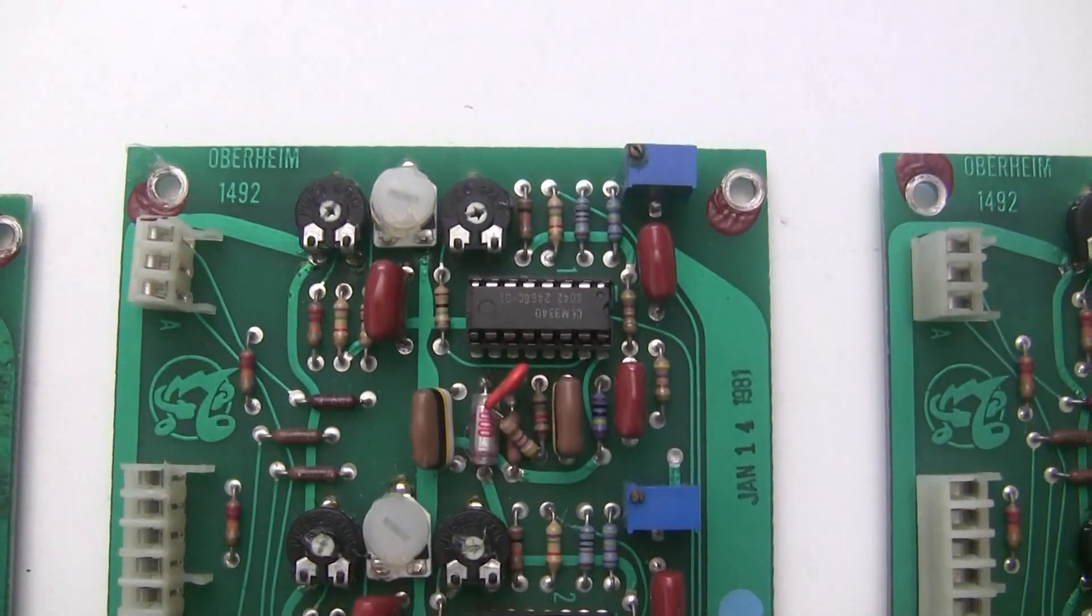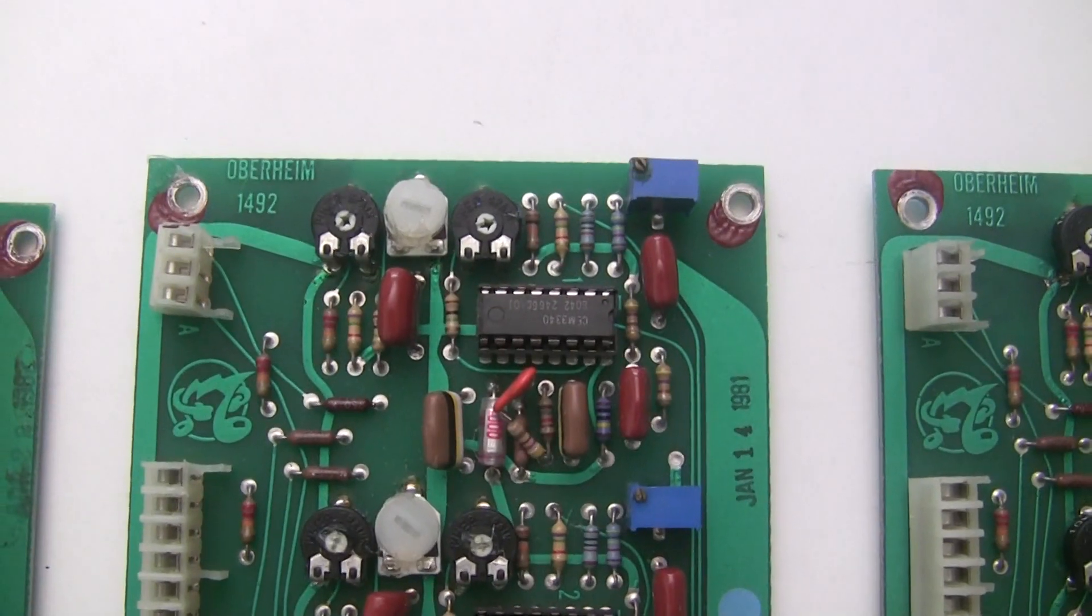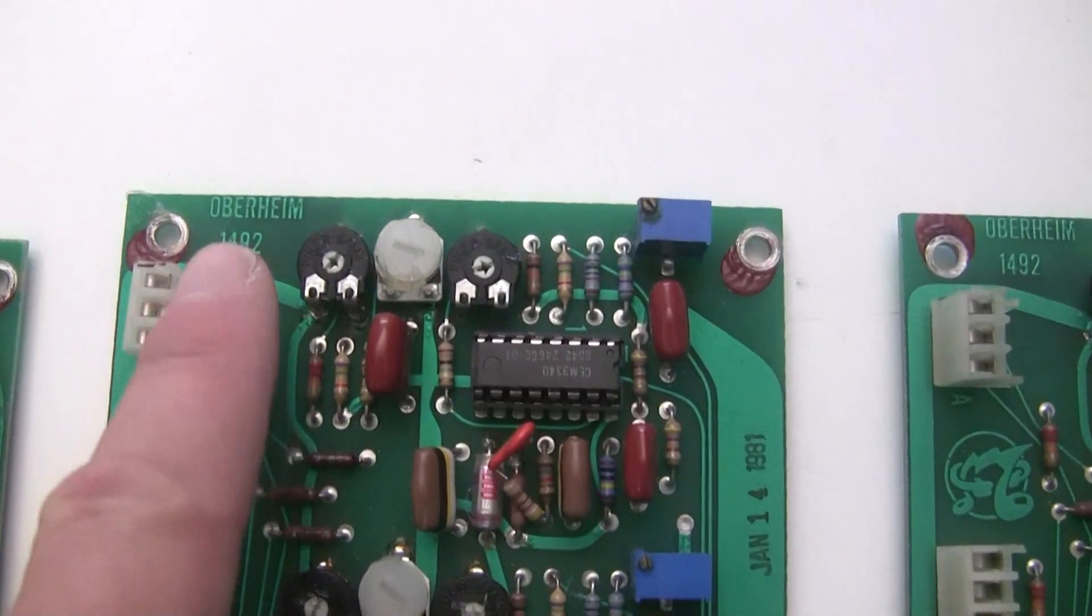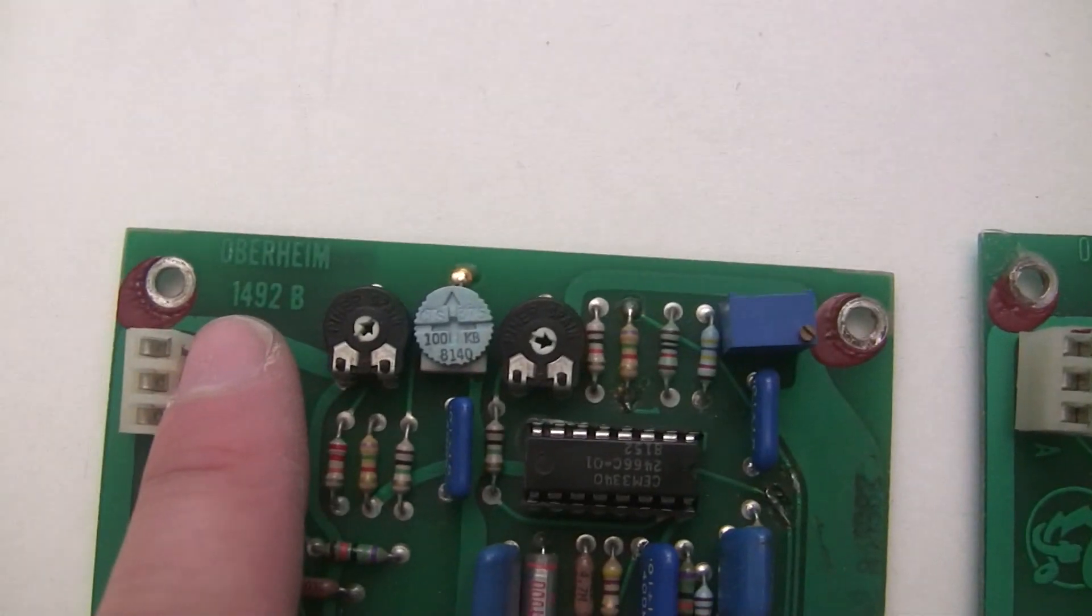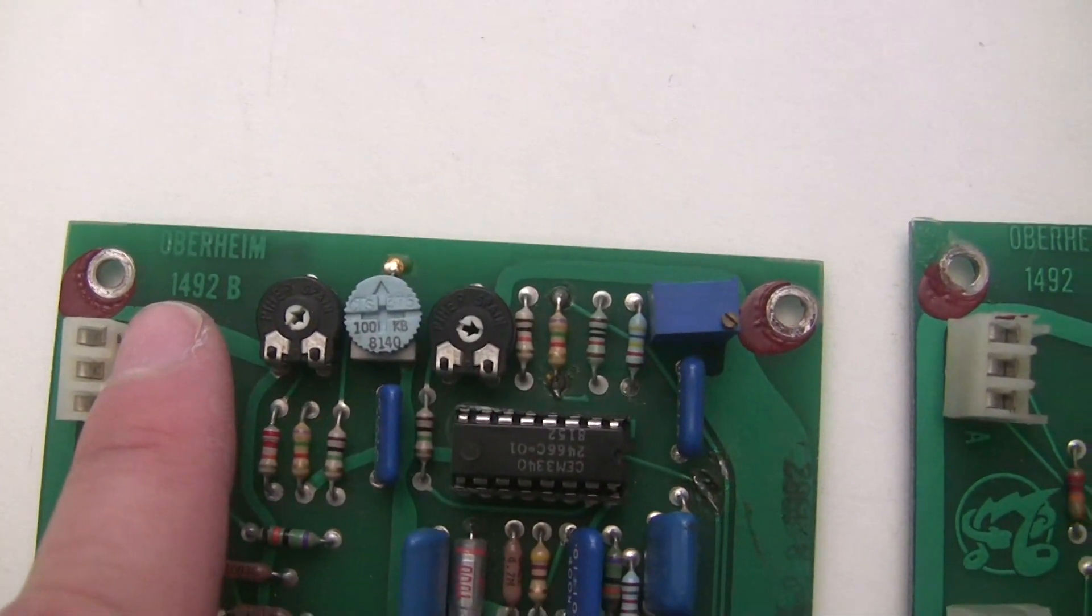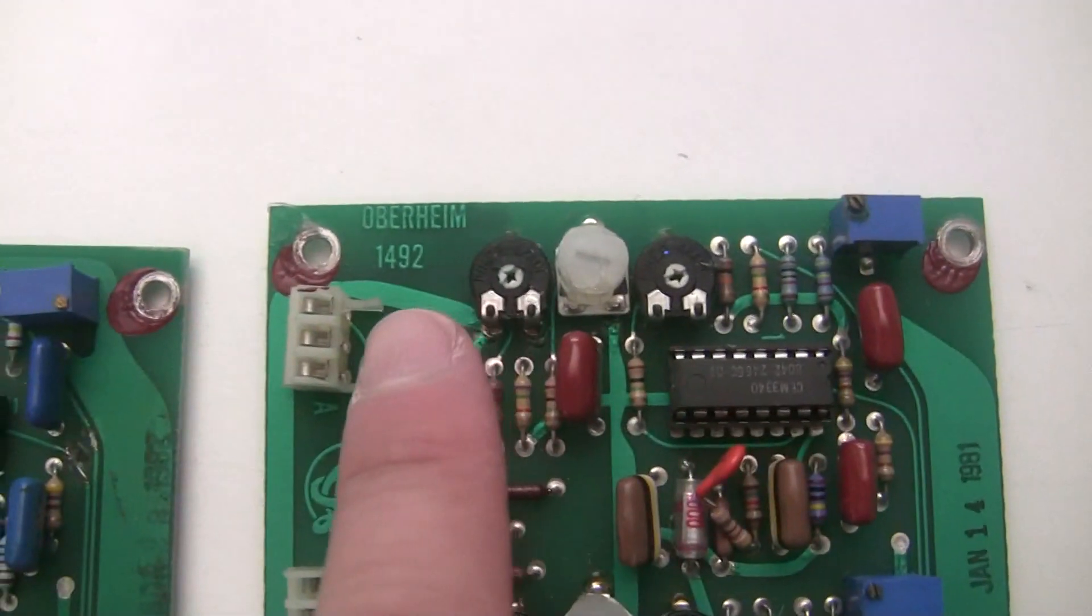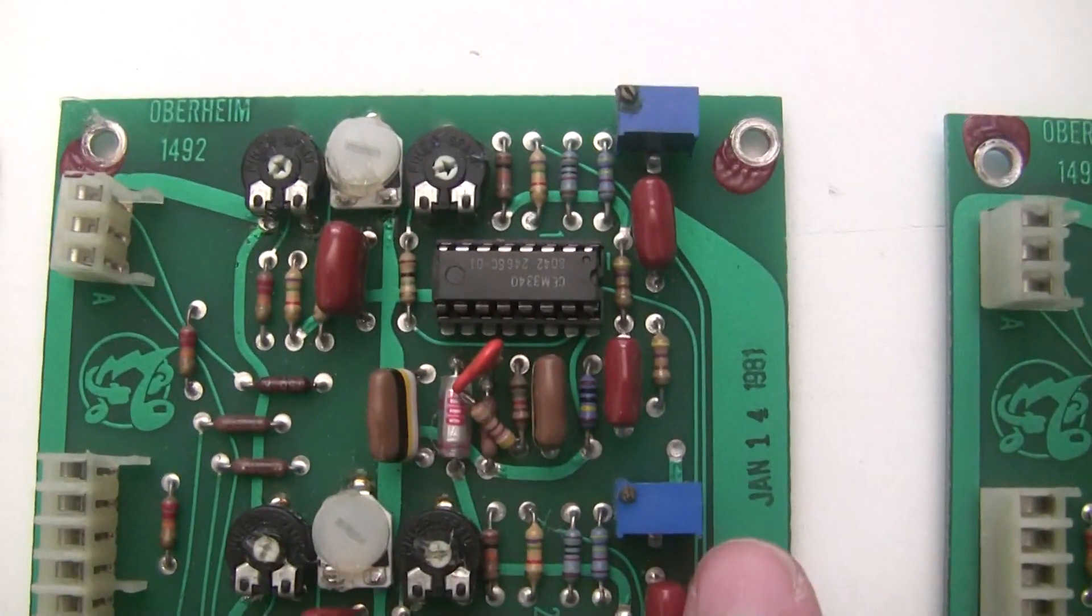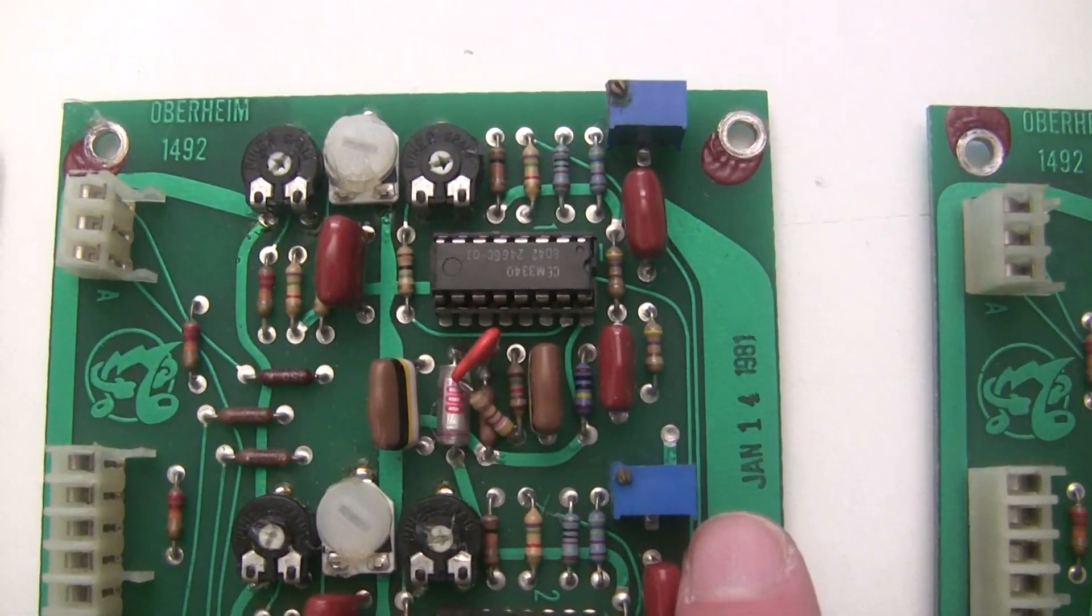And this is another one of the voice cards in Jeremy's OBXA. And this is an earlier revision voice card. So this is the 1492B, and on the back it's 1491B. And this is an older one, earlier revision. See, this is January 1981.